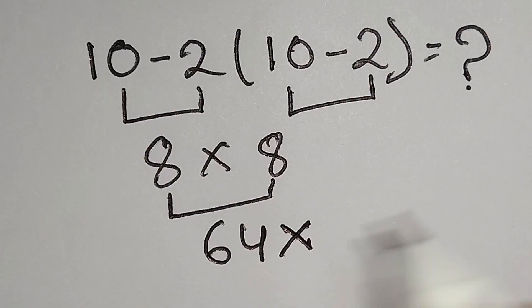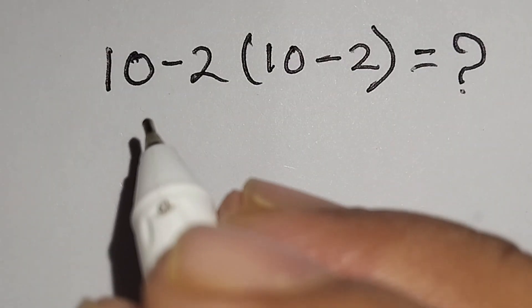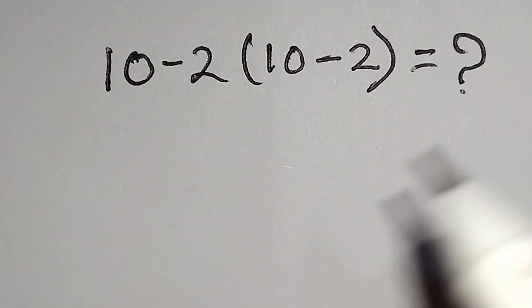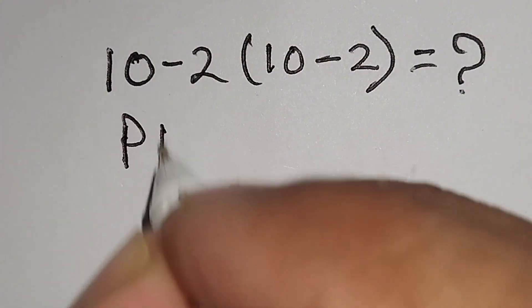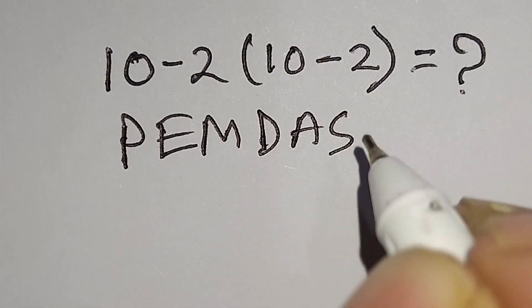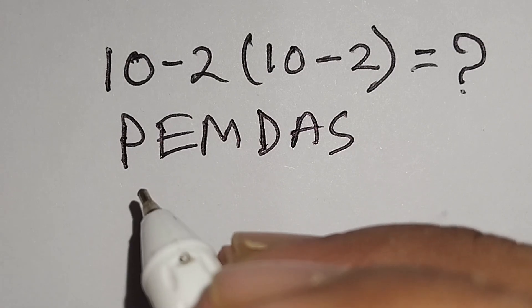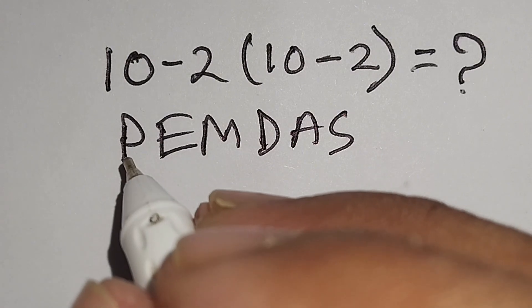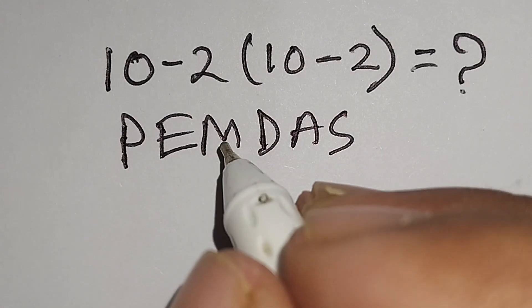Now I will apply the PEMDAS rule to solve this math correctly. Here, P-E-M-D-A-S: PEMDAS. According to the PEMDAS rule, at first we have to work with parenthesis, then exponent, then multiplication or division, then addition or subtraction.